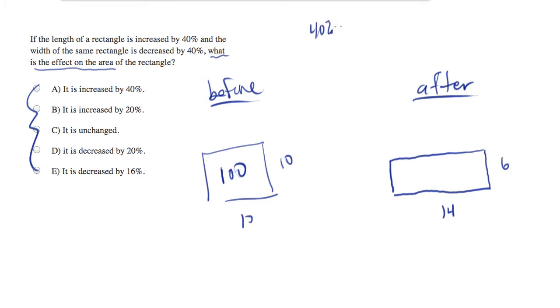Right, so 40% of, this is the math that I'm doing in my head, 40% of 10 equals 4. And I'm adding 4 and subtracting 4 to get the 14 and the 6. Now 14 times 6 is 84.